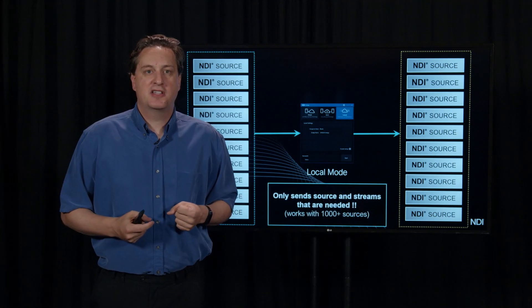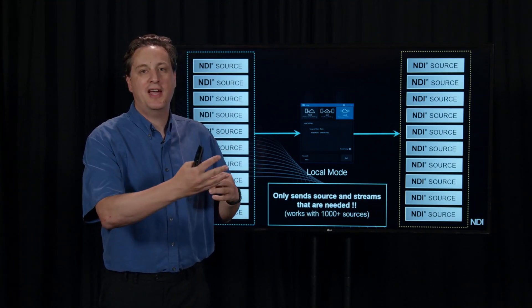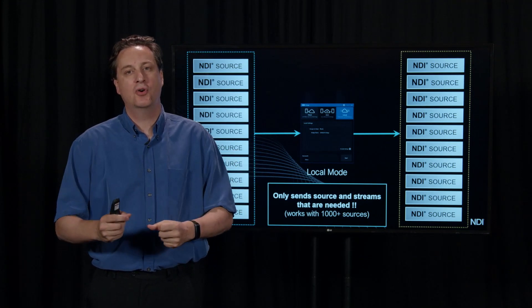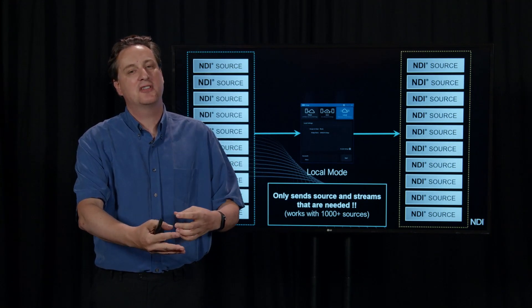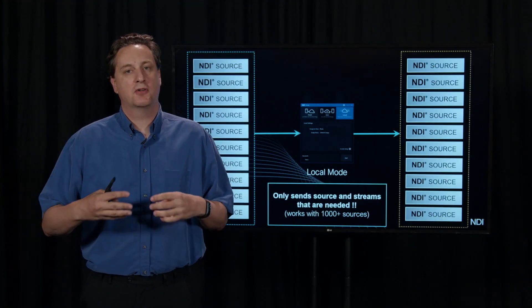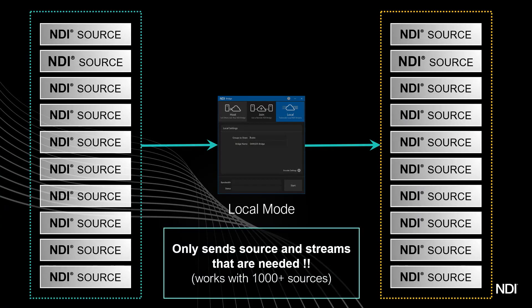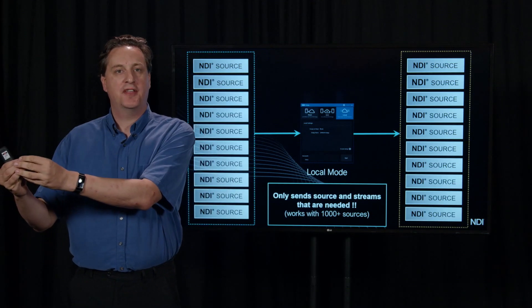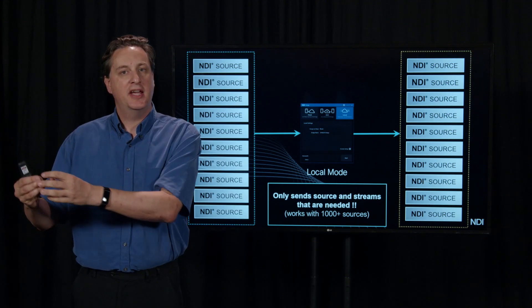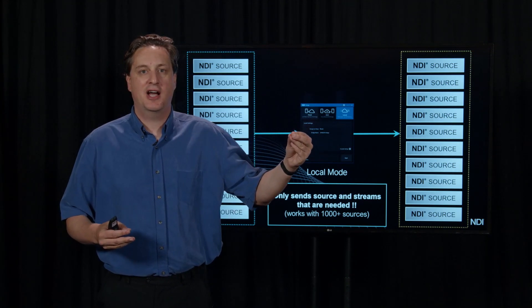You might think this will never work because there could be hundreds or thousands of sources on your network — that would require thousands of streams of decoding and network sending. But NDI Bridge is very intelligent about how it uses bandwidth. Across all of its modes, it will only take the sources that are actually being used on the network at that moment. When you connect to one of the outputs of NDI Bridge, it connects to the upstream inputs and starts receiving the video, using bandwidth only as it is actually needed.